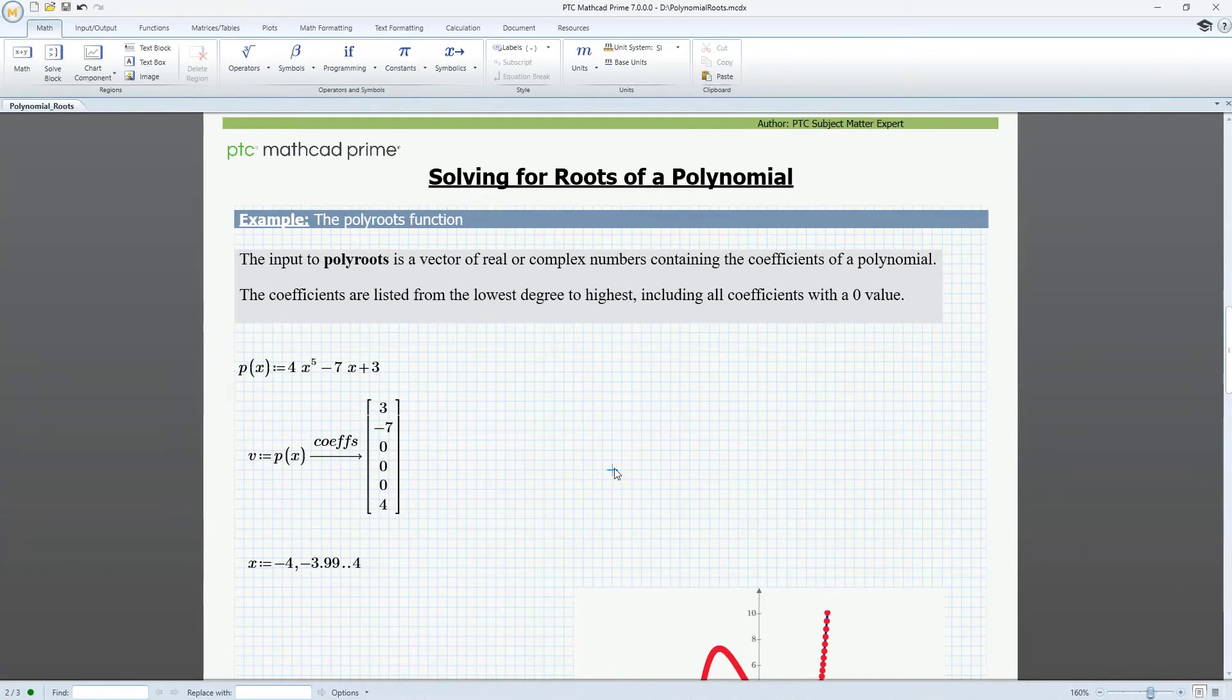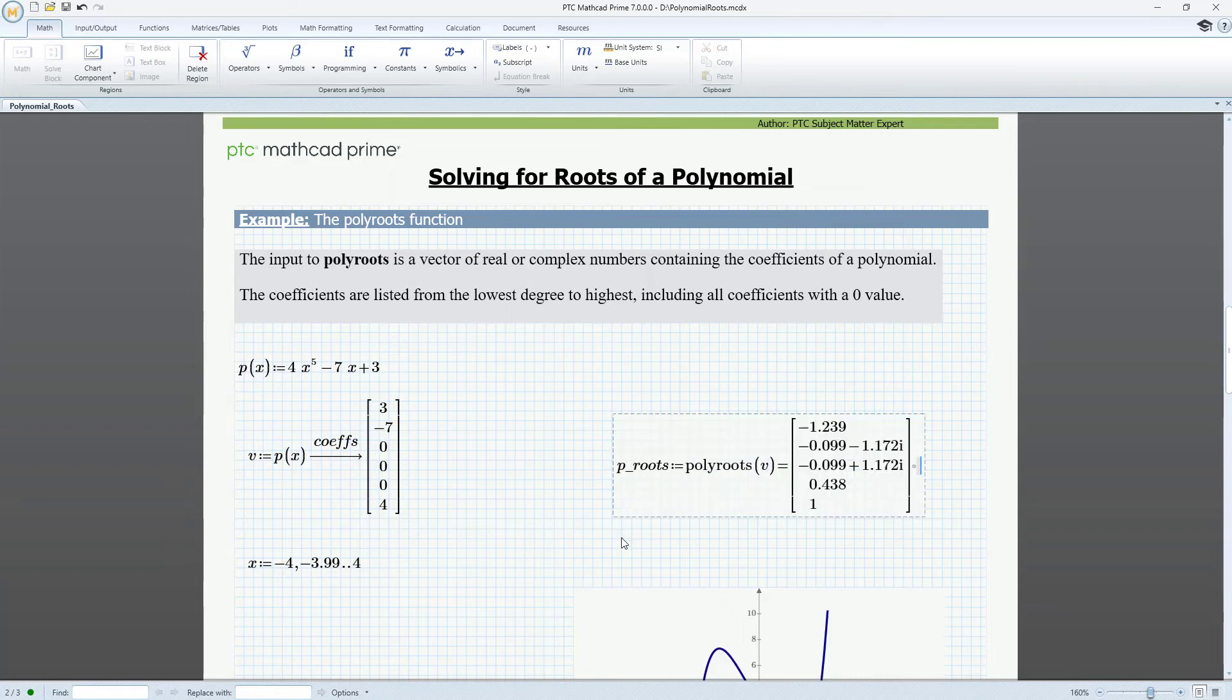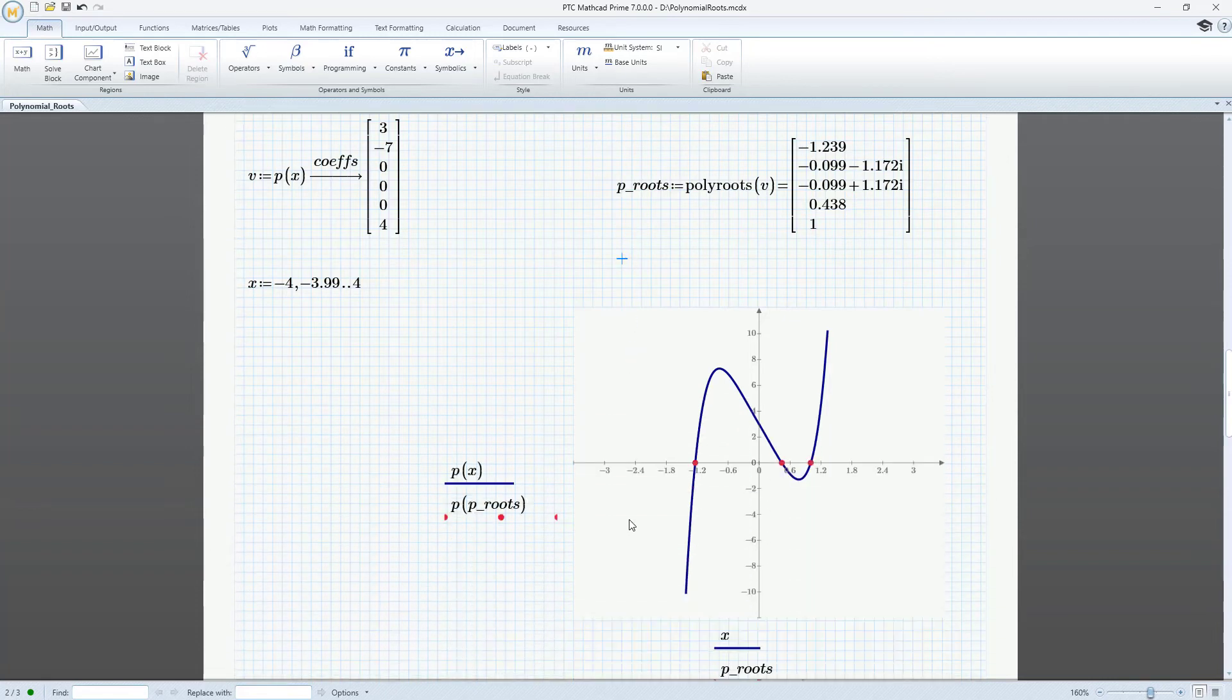Now we can apply polyroots on vector v. The result is a vector of five real and complex roots. We can plot the function to visualize the solution.